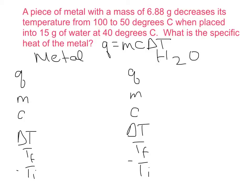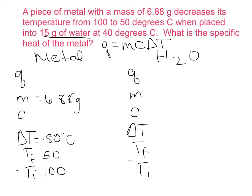Going back to the problem: the metal has a mass of 6.88 grams. Its temperature decreases from 100 to 50 degrees Celsius, so T final is 50 and T initial is 100. That gives a change in temperature of 50 minus 100, which equals negative 50 degrees Celsius. The metal is placed into 15 grams of water, which is the mass of the water. The water starts at 40 degrees Celsius, so that is the initial temperature of the water.